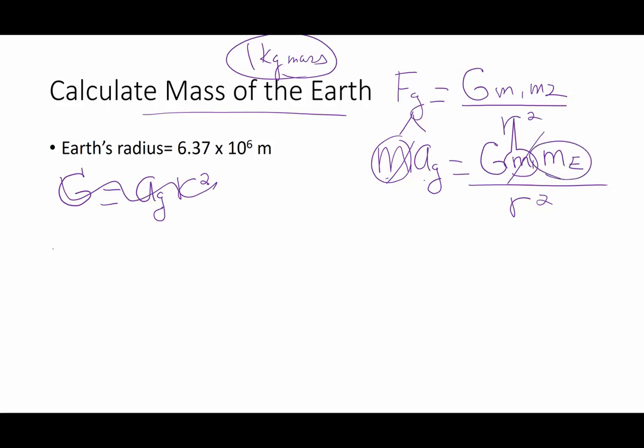And I'm not looking for G. Whoops, sorry. Bad algebra. Mass of the Earth is going to be equal to the acceleration of gravity times the radius squared divided by big G.